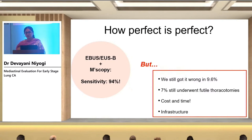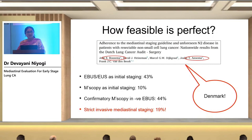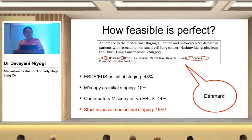We've seen what is perfect — the guideline says negative EBUS needs confirmation with mediastinoscopy. But how perfect is perfect? The ASTER trial showed a combination sensitivity of 94%, yet we still got it wrong in 9.6%, and 7% still underwent futile thoracotomies. Patients paid more and waited longer just to stage their mediastinum. And how many centers in India have infrastructure for both EBUS and mediastinoscopy? Even in Denmark, where all healthcare is paid for, the strict mediastinal staging protocol was adhered to in only 19% of patients — EBUS/EUS as initial staging in 43%, and confirmatory mediastinoscopy in only 44%. These results come from the biggest names in invasive mediastinal staging.